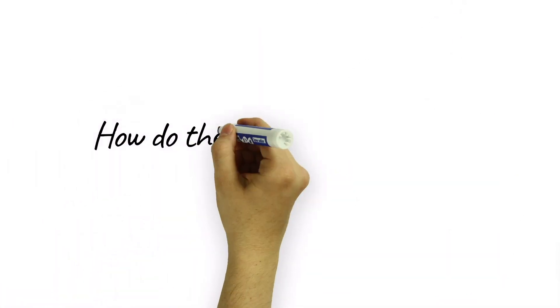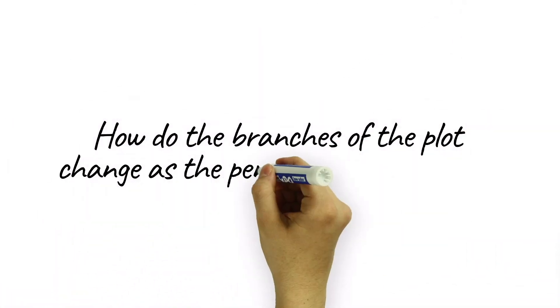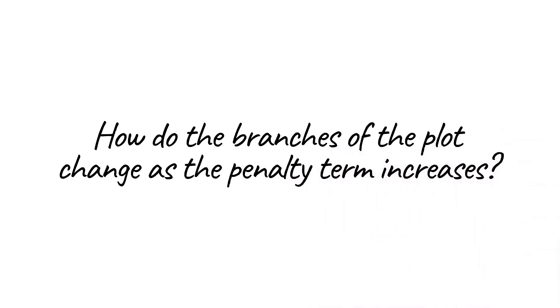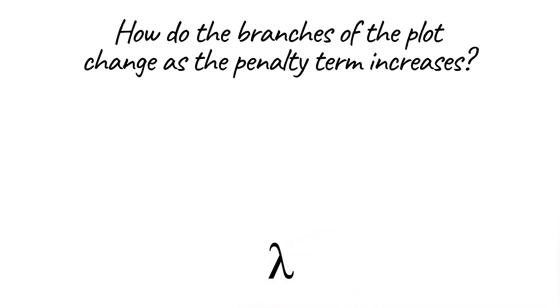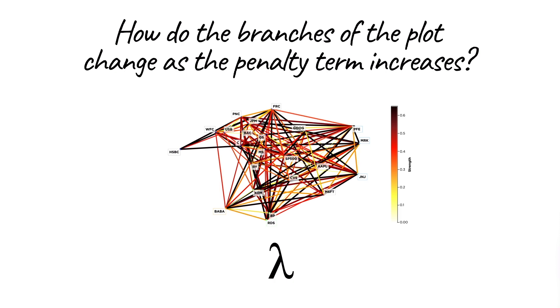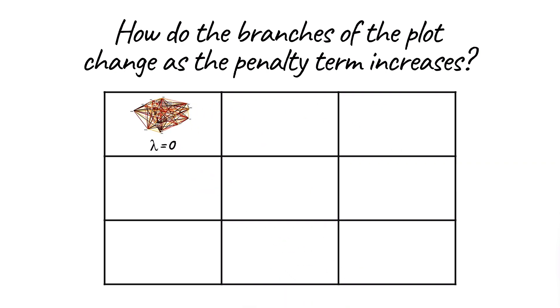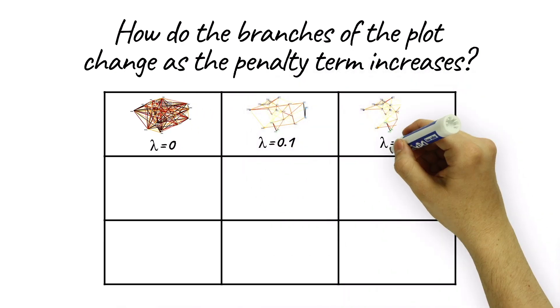Machine learning approaches involve a set of parameters determined by a training step. Here, the main parameter involves a penalty term, lambda, the shrinkage tuning parameter from the graphical lasso technique. Lambda controls the number of edges in the graph. As lambda increases, the number of edges reduce.